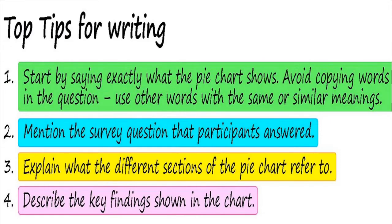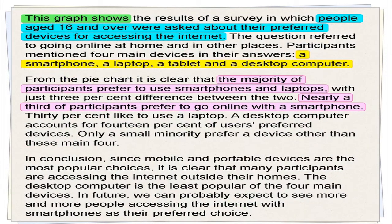Top tips for writing: number one, start by saying exactly what the pie chart shows — avoid copying words from the question, use other words with the same or similar meanings. Number two, mention the survey question and what participants answered, and explain what the different sections of the pie chart refer to. Number three, describe the key findings shown in the chart. Let's try to write it down: 'This graph shows the results of a survey in which people aged 16 and over were asked about their preferred devices for accessing the internet, preferring to go online at home and in other places. Participants mentioned four main devices: a smartphone, a laptop, a tablet, or a desktop computer.'